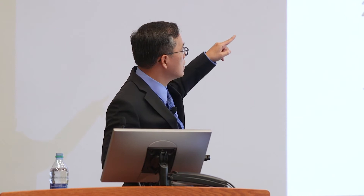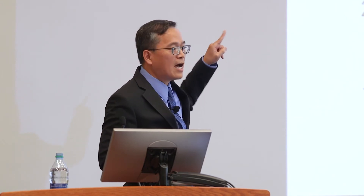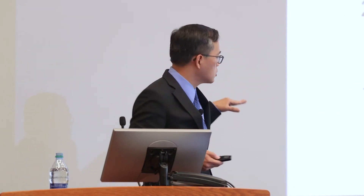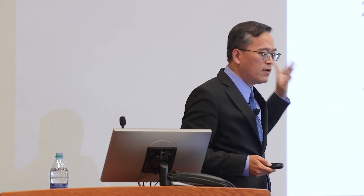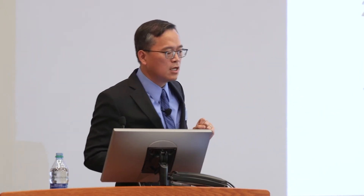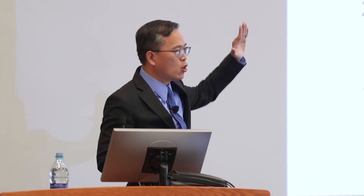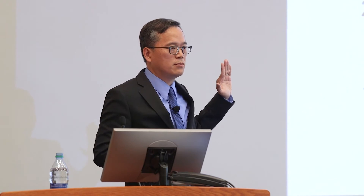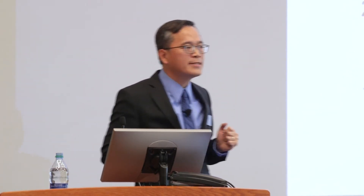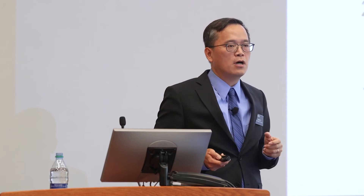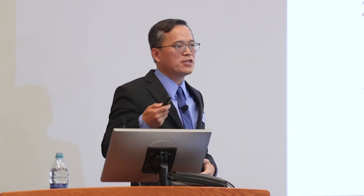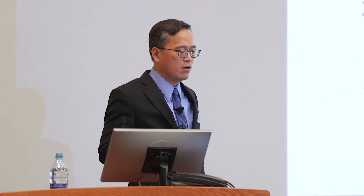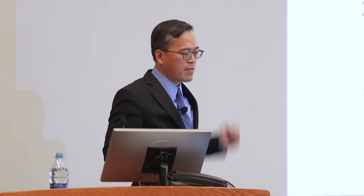Number one: rent. Rent explains most of the variation of home price by zip code. In this chart, each blue dot represents one zip code. The horizontal axis is the monthly rent, and the vertical axis is the median home price. By and large, we can see a strong correlation, which makes sense — in theory, home price should be the present value of all future rental revenue of the house.